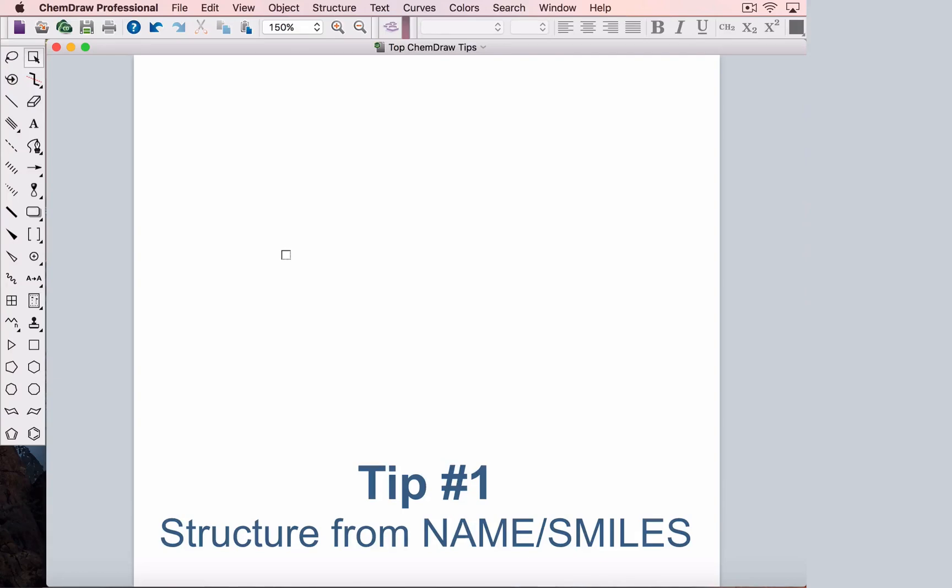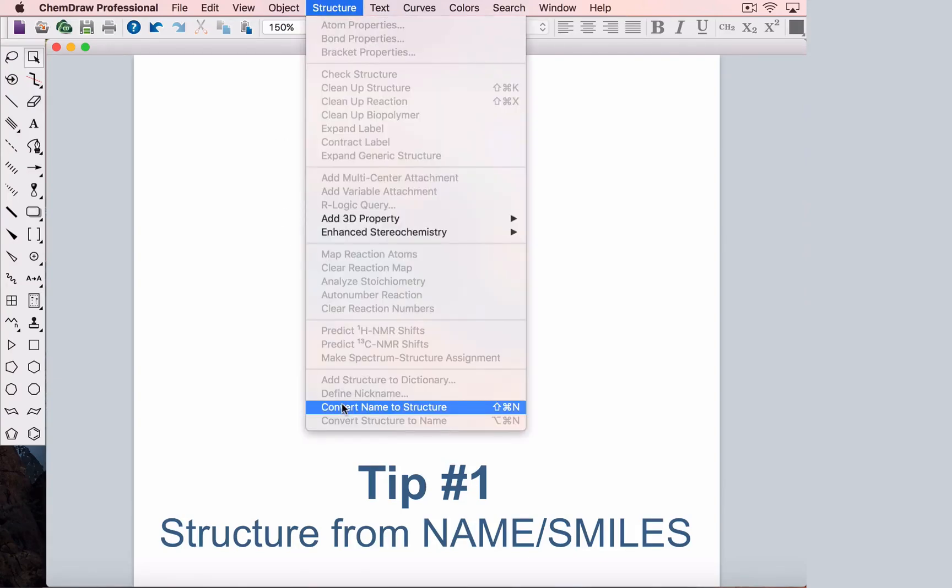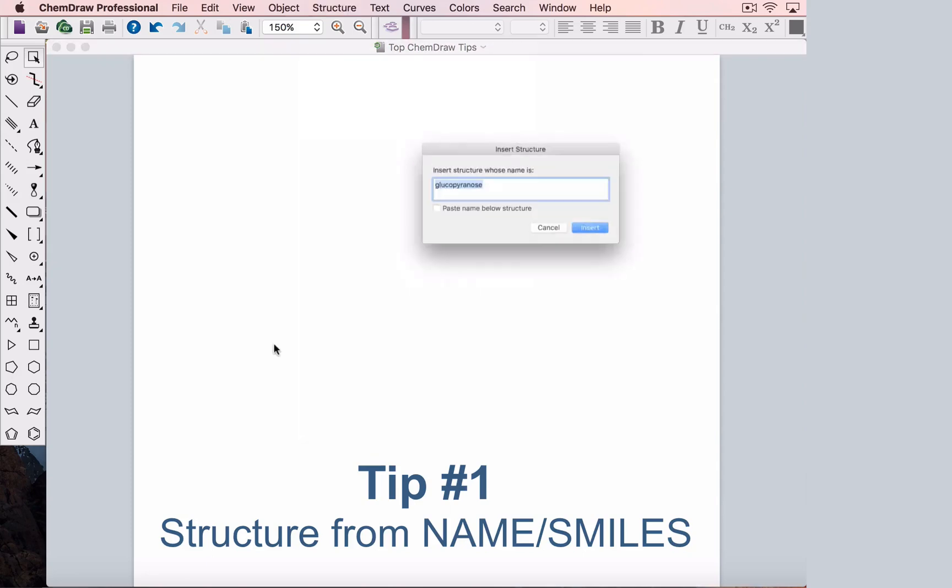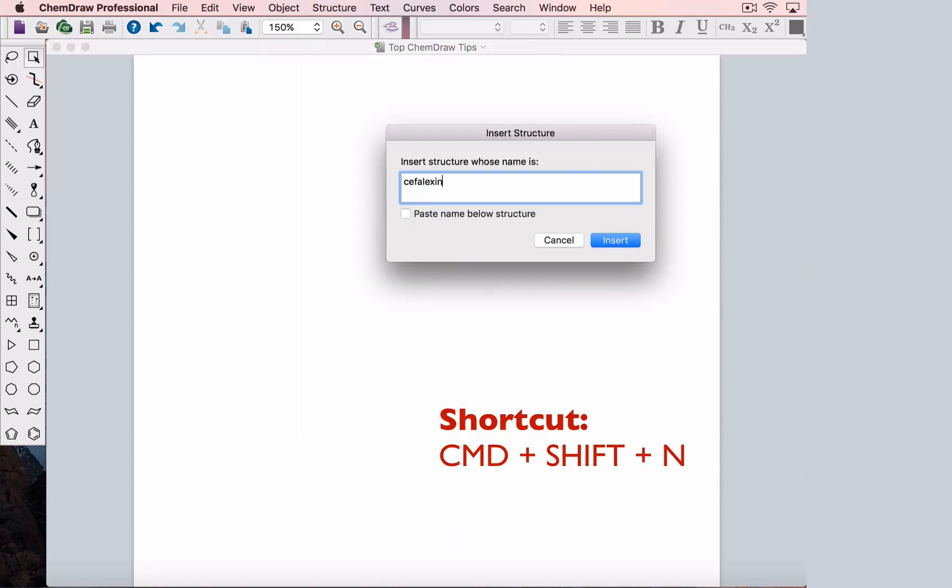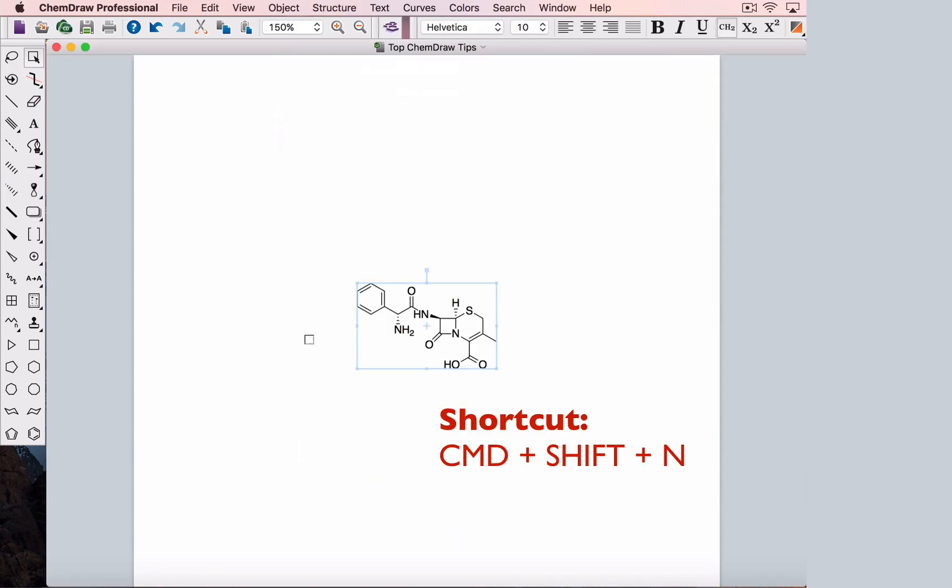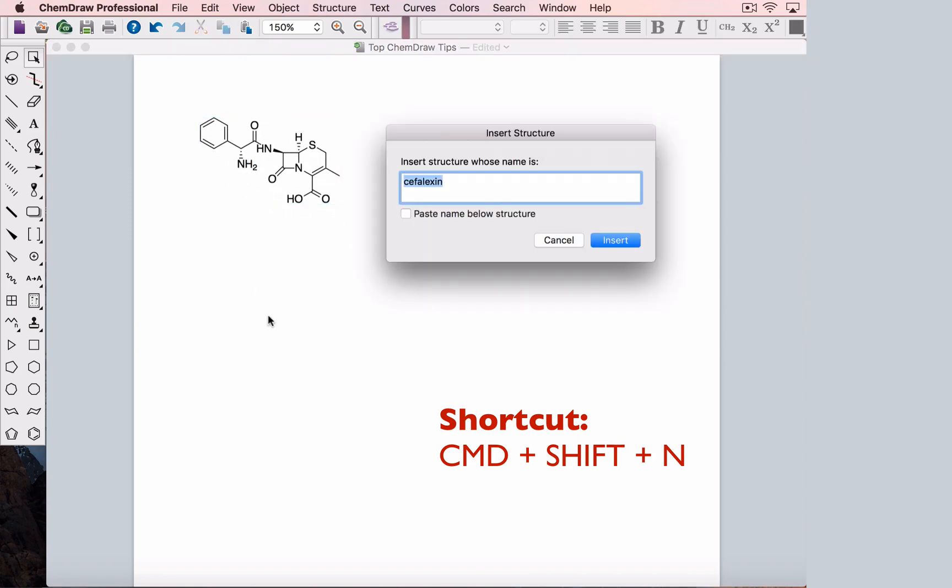You can generate structures quickly from their names. ChemDraw 16 is smarter than ever and able to generate the structures of drugs from both trade and generic names using a database. If you're TAing and want to write some quiz questions for students to identify functional groups on interesting molecules, this is a great way to do it.